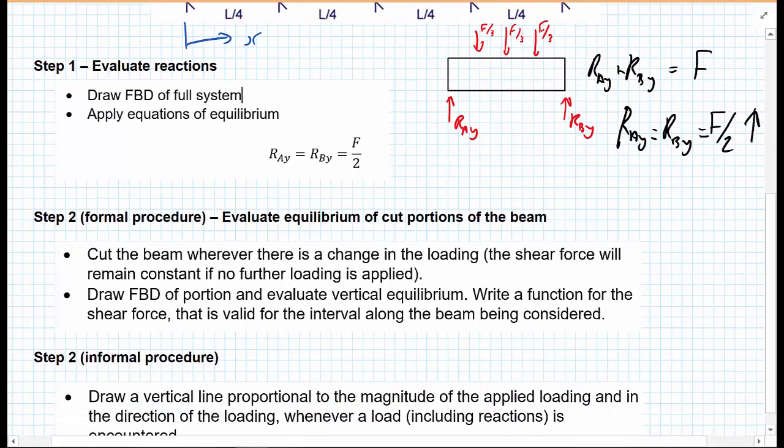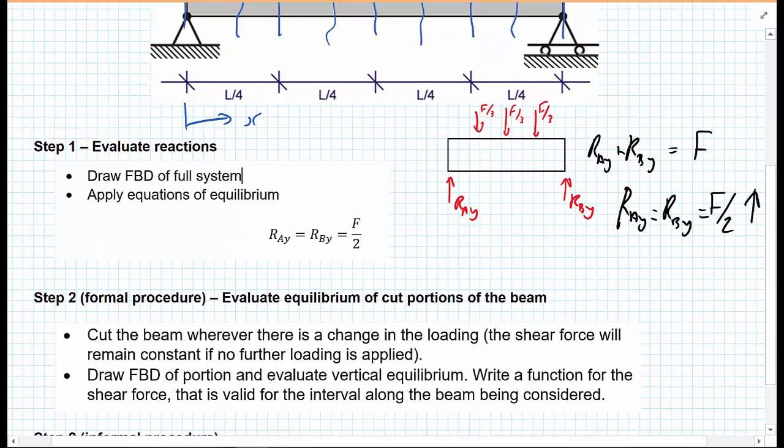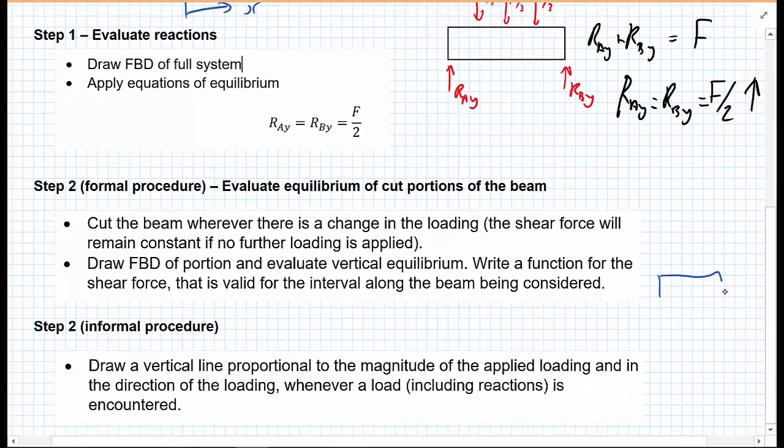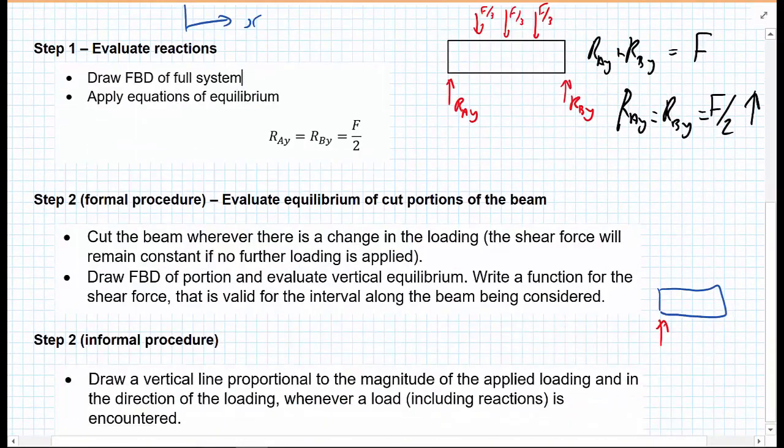So that is the formal procedure. You do method of sections. You cut the beam wherever there is a change in the loading. The shear force will remain constant if no further loading is applied. And the second part of the procedure is we draw a free body diagram of each portion and evaluate vertical equilibrium. We write a function for the shear force that is valid for the interval along the beam that is being considered. So we could imagine we could draw the free body diagram for cut number 3. We have the reaction force here, and before we get to cut number 3, we have 2 of the F upon 3s, and then up on the left, down on the right, we would have a shear force at this section.